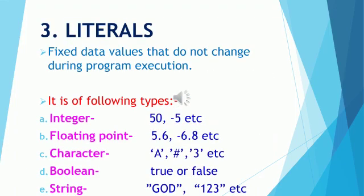The third part of a Java program is literal. These are the fixed data values that do not change during program execution. The values we can use in our Java program include integers, which take any positive or negative number but without a decimal point. Second, floating point literals, which include any decimal values with a positive or negative sign.